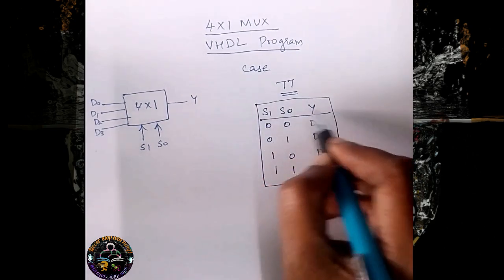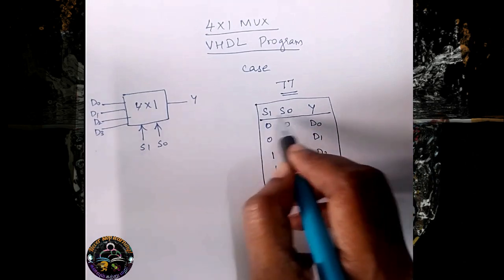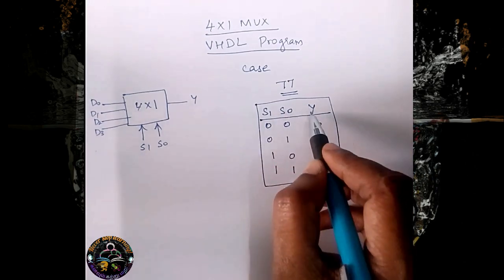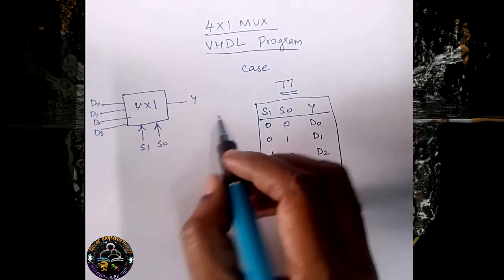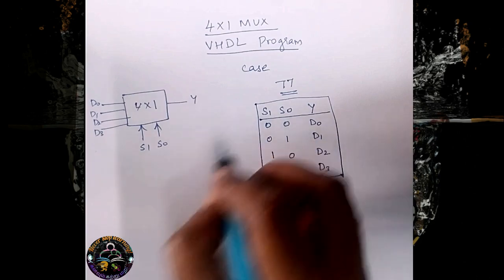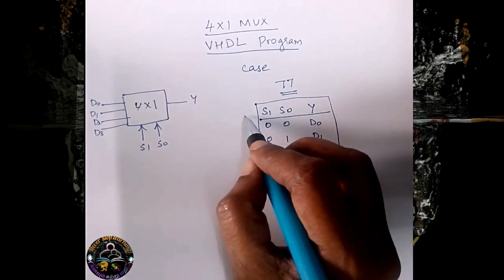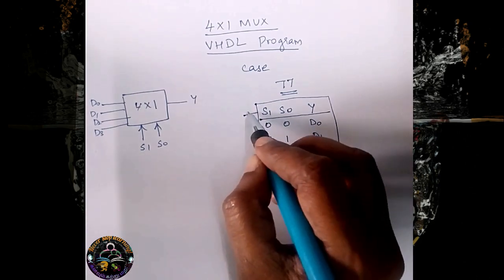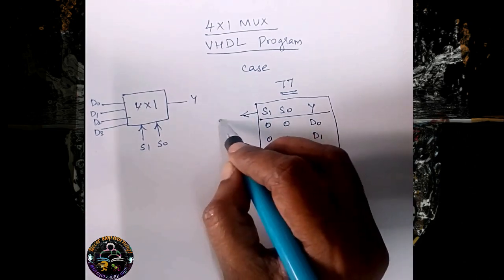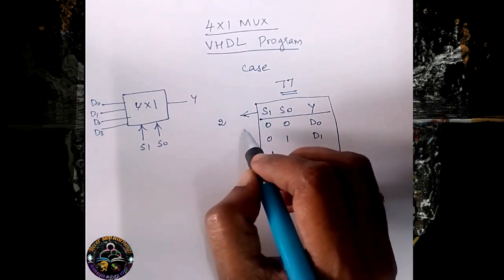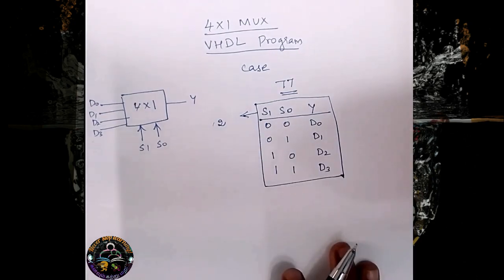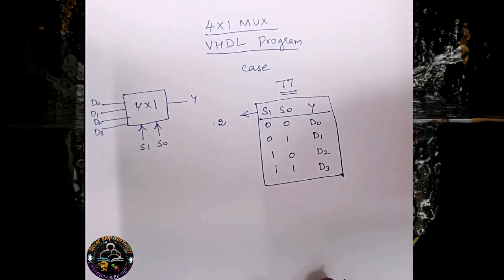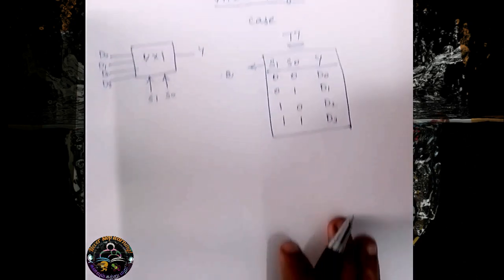So depending upon the selection line, we can select any one of the data inputs. We can understand that the selection line is 2 bits. Now we are going to write the VHDL program.